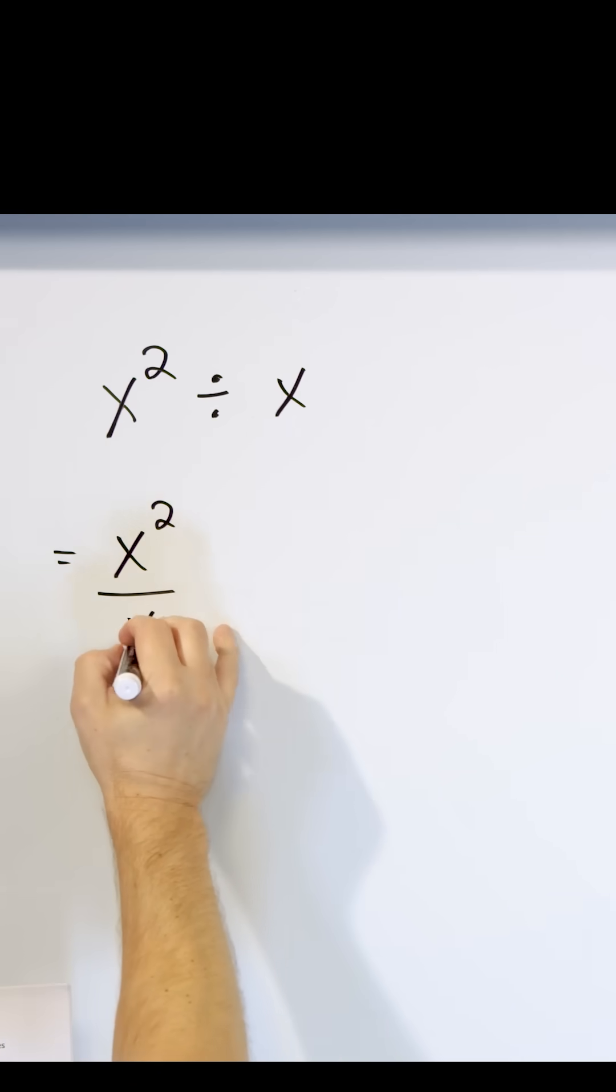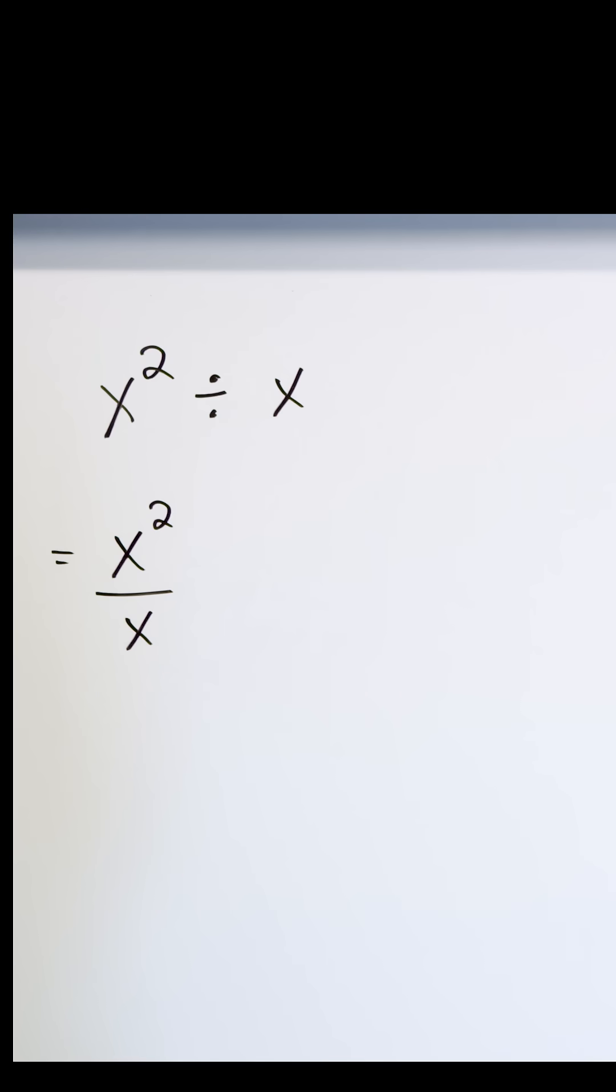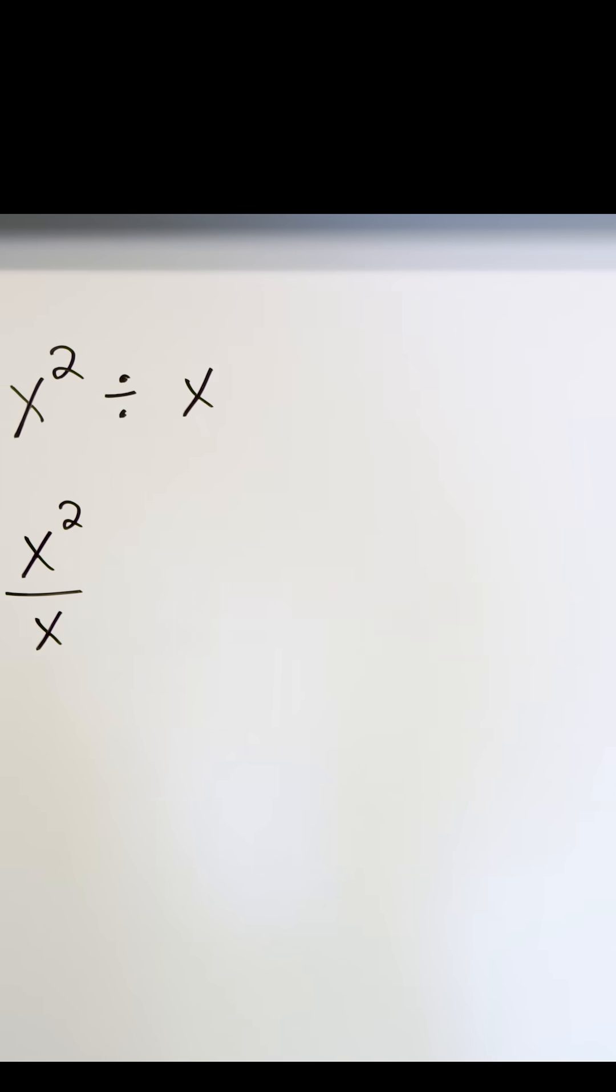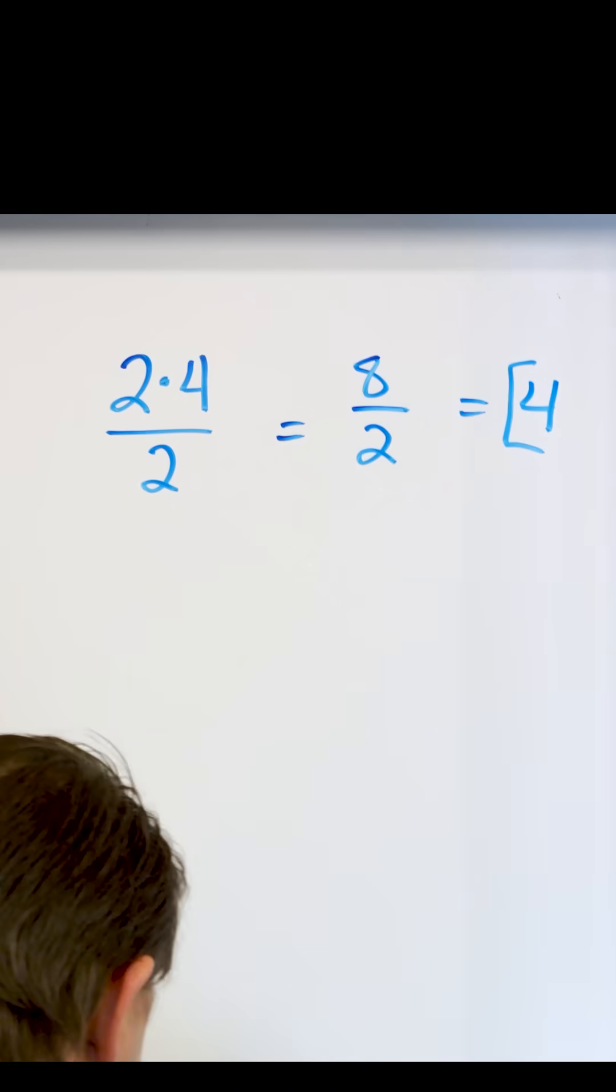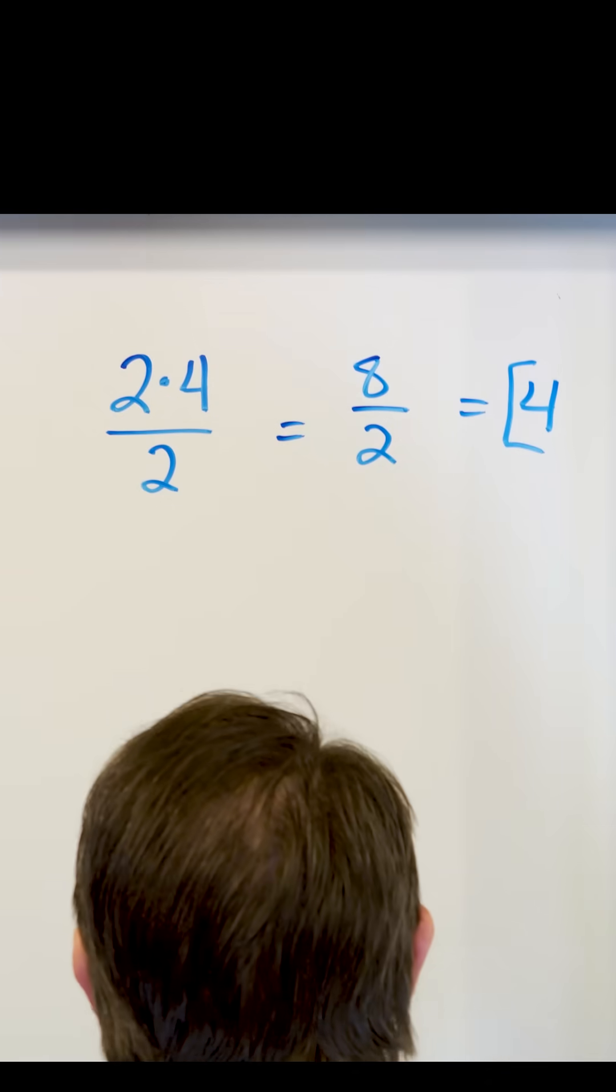x squared divided by x. These mean the same thing. Now before we actually do anything, I want to go back to talk about numbers a little bit because everybody understands numbers. 8 divided by 2 would be 4 and this would be the final answer. All right, now let's do it another way.